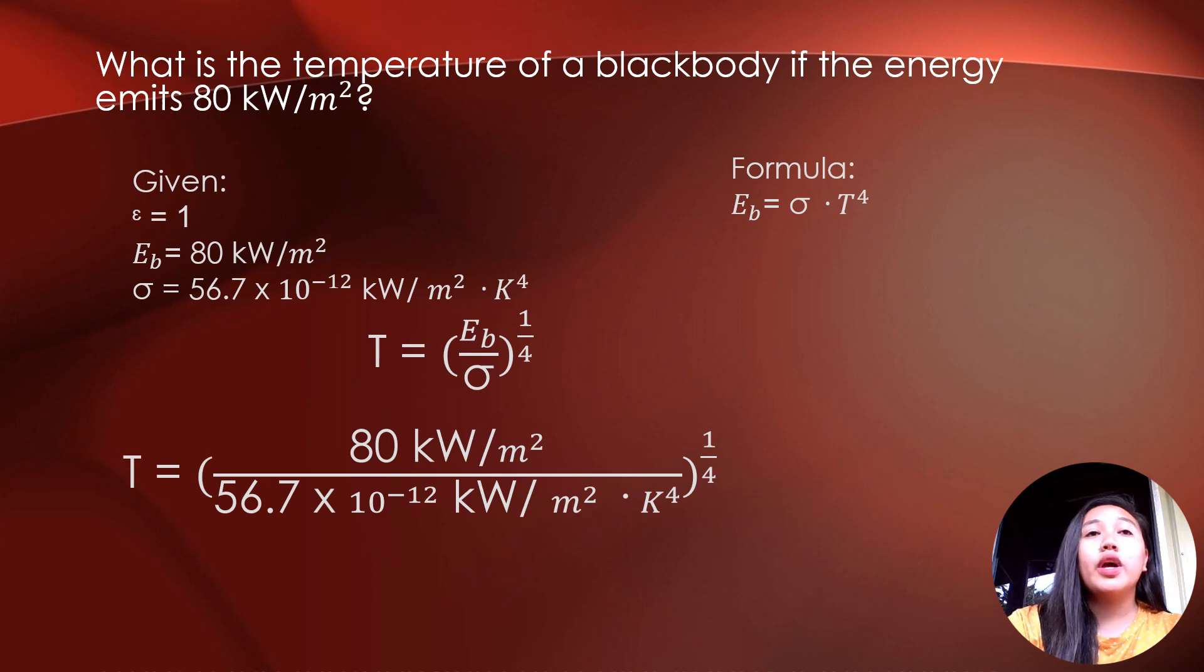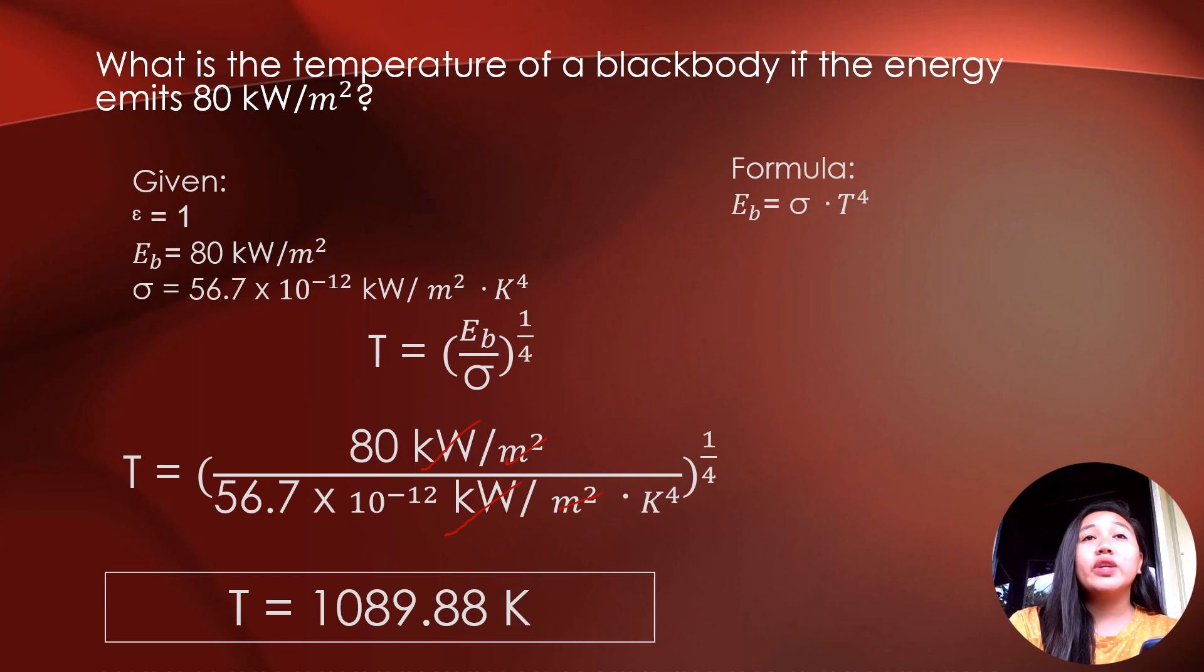We are going to cancel kilowatts per square meter, and we are left with Kelvin. So if we cancel this, we have 80 over 56.7 times 10 raised to negative 12, raised to 1 fourth.